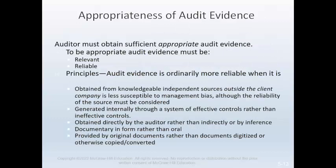Audit evidence is all the information used by the auditors in arriving at the conclusion on which the audit opinion is based. It includes information contained in the accounting records underlying the financial statements and other information. Audit evidence must be both sufficient and appropriate. Sufficiency is a measure of the quantity of audit evidence obtained; the quantity needed is affected by the risk of material misstatement and the reliability of the evidence. Appropriateness is the measure of the quality of audit evidence.